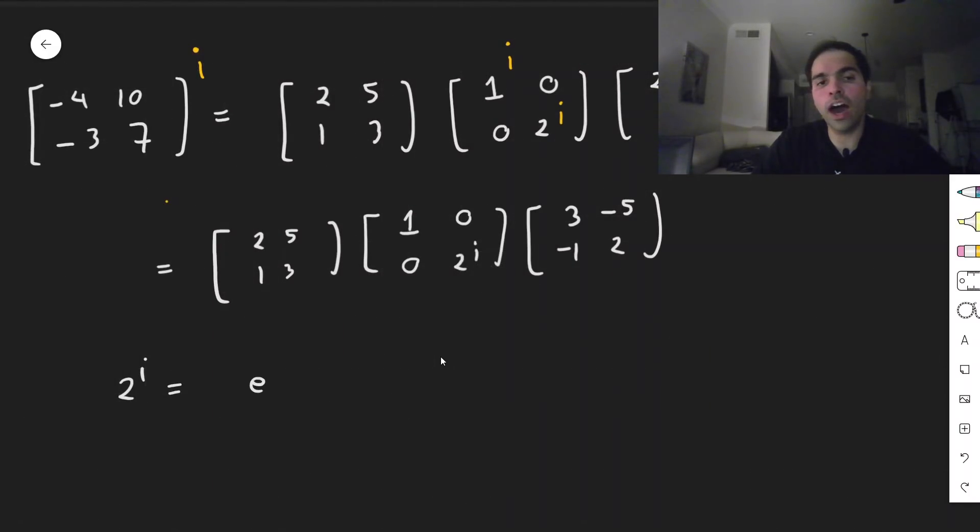Notice 2 to the i, 2 is e to the ln of 2, so if you raise it to the i-th power, you just multiply this by i, but then by Euler's formula, this just becomes cosine of ln of 2 plus i sine of ln of 2.